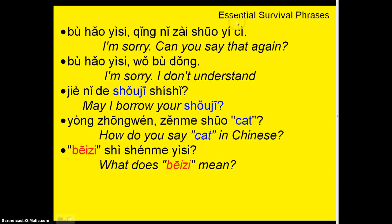These are the essential survival phrases you're probably going to need in any class, and certainly when you're in Beijing or Shanghai. You're definitely going to need to know how to say: I'm sorry, can you say that again? I'm sorry, I don't understand. May I borrow...? How do you say cat in Chinese? And what does beidze mean? So if someone says something you don't understand, you'll need to communicate that.